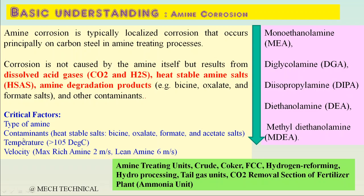The second critical factor is the contaminants present in the Amine — heat stable salts like biocene, oxalate, formate, and acetate salts, and dissolved acid gases CO2 and H2S. If the heat stable salts percentage increases above 2%, the Amine becomes more corrosive for carbon steel. The third critical factor is temperature. If the system temperature is above 105°C, we are much more susceptible and in the range of corrosion.